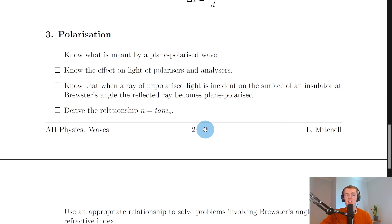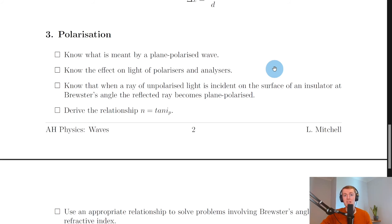Our final key area is polarisation. You need to know what is meant by a plane polarized wave — this is when light has electric field oscillations in one plane only. You also need to know the effect of polarizers and analyzers: when you pass light through the first polarizer it becomes plane polarized, and if you observe it through an analyzer in the same orientation the light is completely transmitted. Rotating the analyzer through 90 degrees causes brightness to decrease until the light is completely blocked, and rotating a further 90 degrees returns it to full brightness.